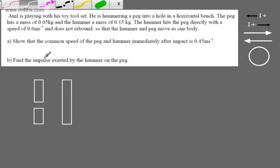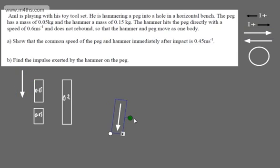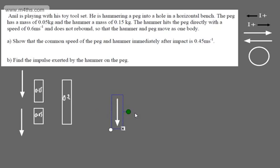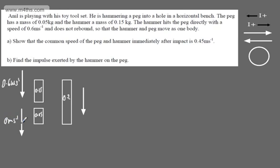Let's model this up with a before shot and an after shot. Before: the hammer has mass 0.15 kg and the peg has mass 0.05 kg, giving a combined mass of 0.2 kg after. The hammer's speed before is 0.6 meters per second, and the peg is at rest — 0 meters per second. Afterwards, the hammer and peg move together with a common speed of V meters per second.